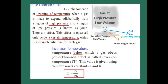Joule-Thomson effect: it is the phenomenon of lowering of temperature when a gas is made to expand adiabatically from a region of high pressure to a region of low pressure. This effect is observed only below a certain temperature — that characteristic is specific to each gas. We can obtain this effect at all temperatures below some certain temperature for each gas.